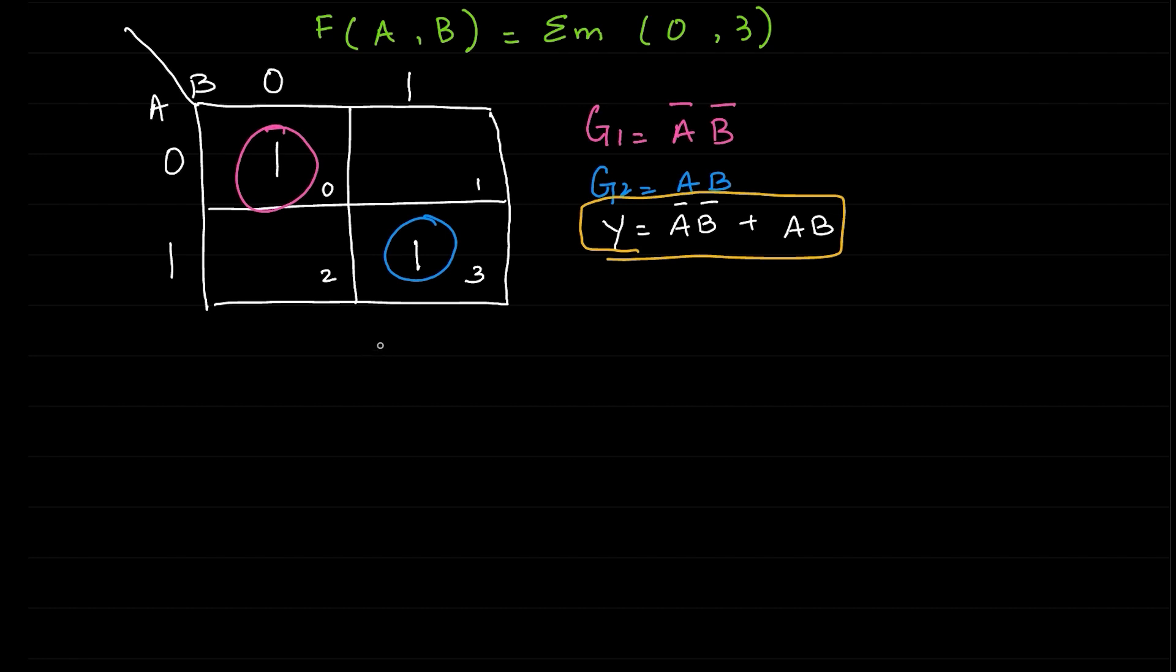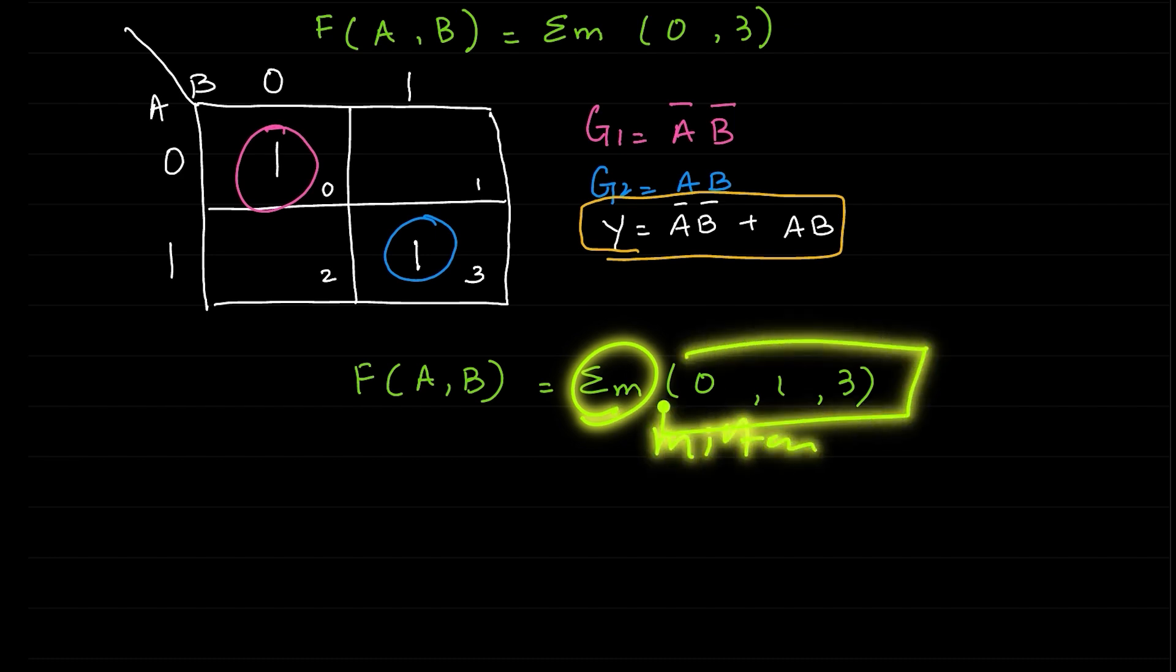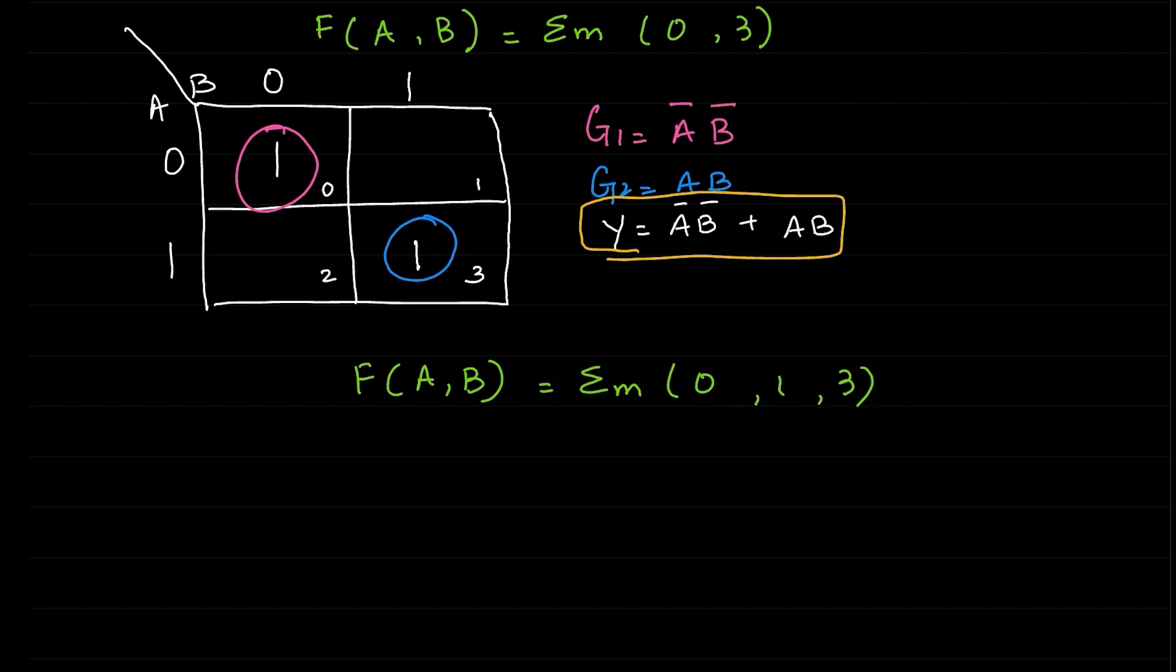Let's solve another example now. F(A,B), function A, B is equal to min term 0, 1, and 3 this time around. Again this is the min term and all these numbers will be considered as 1. Let's draw a K-map.